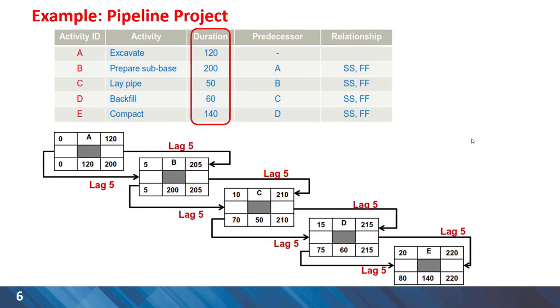As you can see now activity blocks are populated with early start and early finish time and in the backward pass late finish and late start times. Everything seems alright but have a closer look on activity C. We can see that the duration of this activity is the minimum, only 50 days of duration.